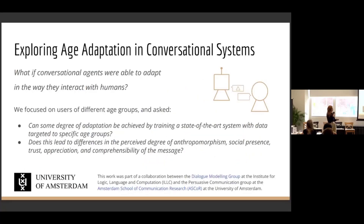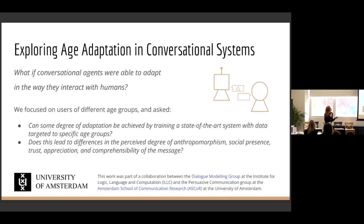I'm presenting work done with colleagues when I worked at the University of Amsterdam before coming to Aberdeen. It was an interdisciplinary collaboration between our dialogue modelling group and some interesting researchers in the School of Communication Research, looking at whether conversational agents are able to adapt in the way they interact with humans. Notably this work was done in 2021, so it would be interesting to redo this now in light of current advances.